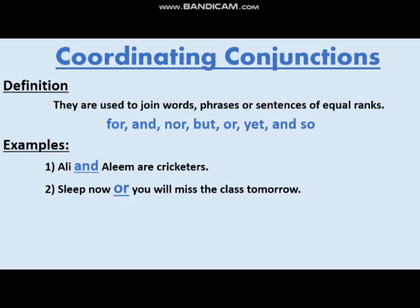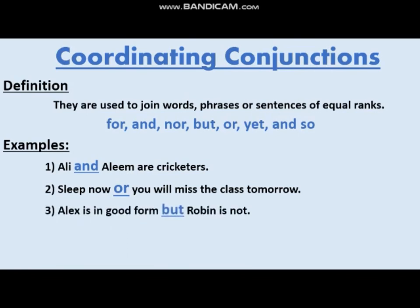Now, correlative conjunctions. A correlative conjunction always comes in a pair and joins two words, phrases, and sentences together. These are different correlative conjunctions: either/or, not only/but also, neither/nor, both/and, whether/or. They always come in pairs. For example, 'The company deals in both hardware and software' — 'both' and 'and' are correlative conjunctions here.